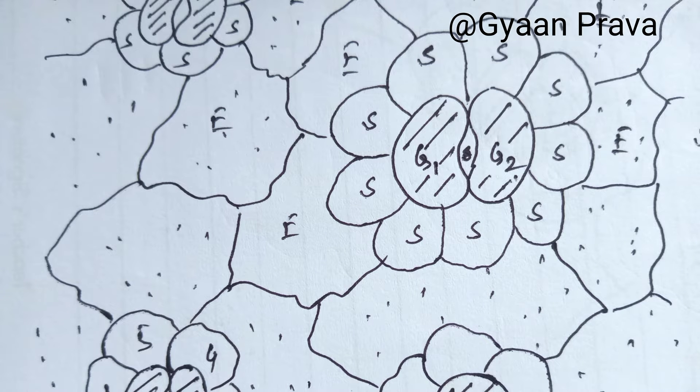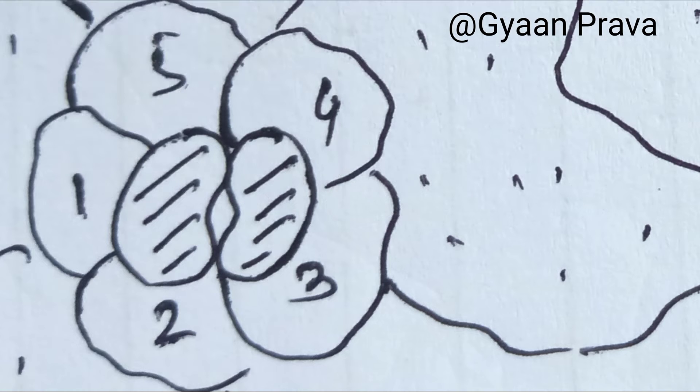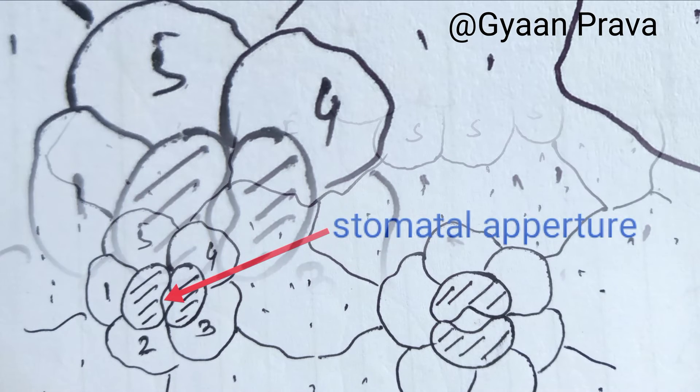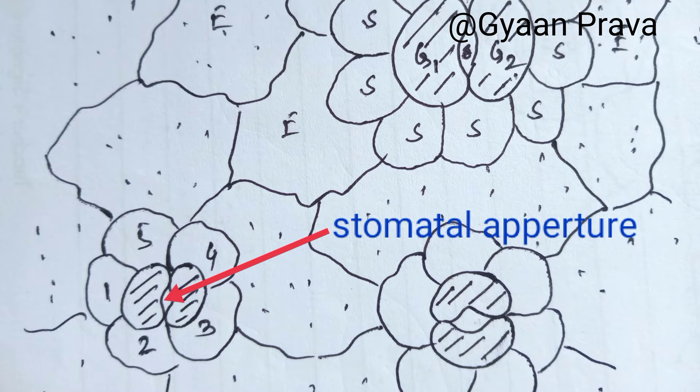In the slide, the guard cells are circled by radiating subsidiary cells. The minimum number of subsidiary cells is five.